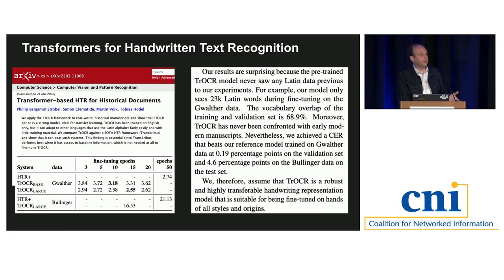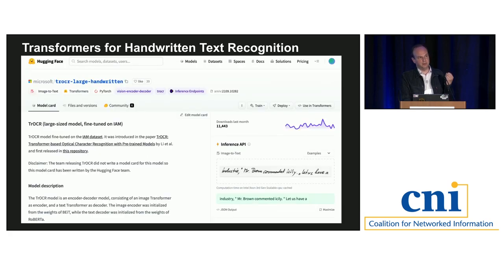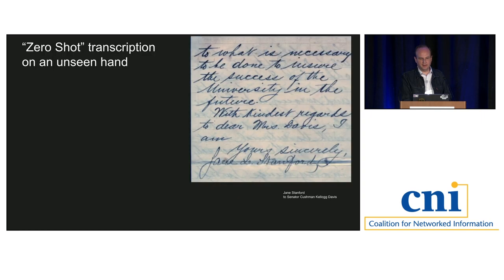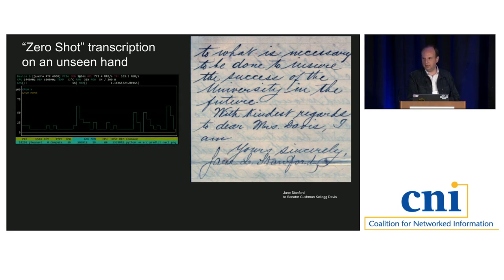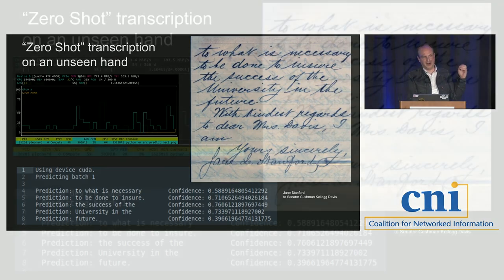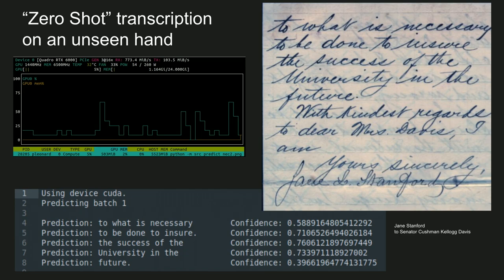There are interesting papers about TR-OCR as a model that can be fine-tuned but doesn't necessarily have to be. The weights, available freely from Microsoft, can be trained on a corpus in a particular hand — but you may not need to. This is a letter from Jane Stanford, founder of Leland Stanford Junior University, writing to a senator. It was never part of TR-OCR's training data. We take it line by line, feed it into a GPU, use the TR-OCR weights, and get a great record of what she wrote — zero-shot on a hand it had never seen before.